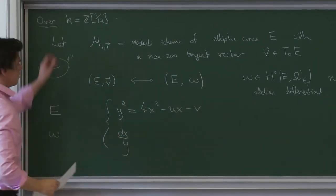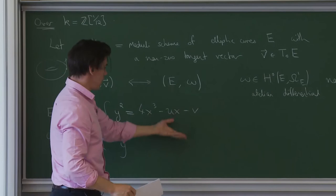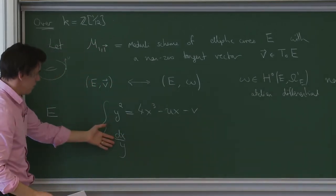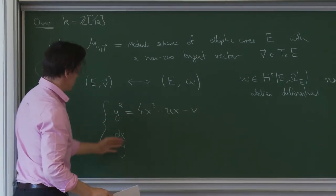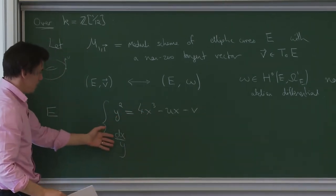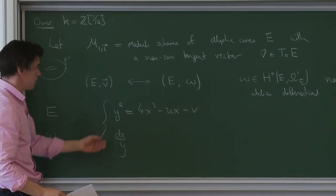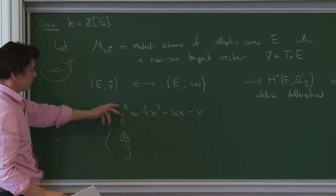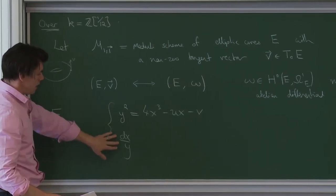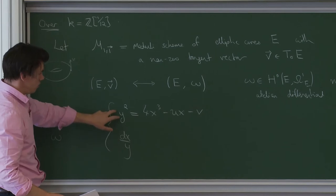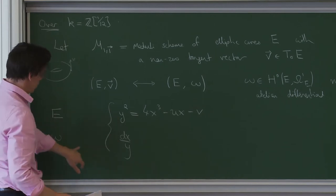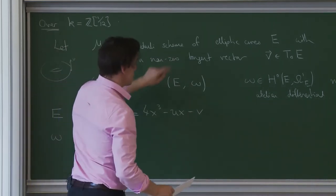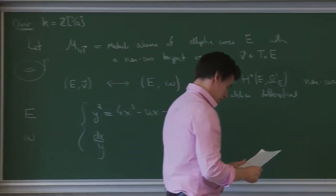If you scale this in the usual manner, that will define an isomorphic elliptic curve but this differential will also get scaled. More importantly, when y goes to minus y — this involution — you don't detect it on the equation, but you do detect it on the differential omega because it will change sign. And that's the reason that this is a scheme and not a stack.